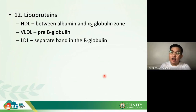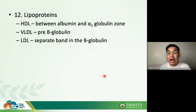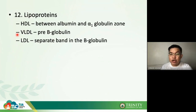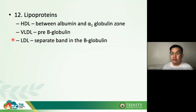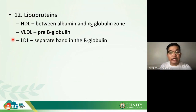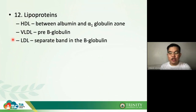Lipoproteins: the protein portion of lipoproteins are called apolipoproteins. Apo A1 is for HDL; Apo B100 is for LDL and VLDL; Apo B48 is for chylomicrons. Lipoproteins have already been discussed thoroughly, so we will move forward.